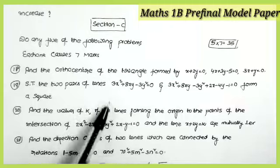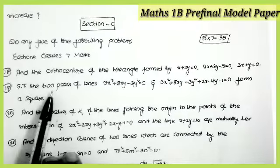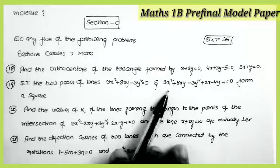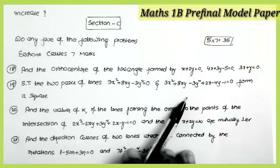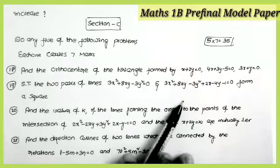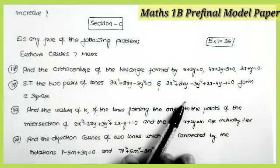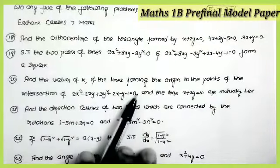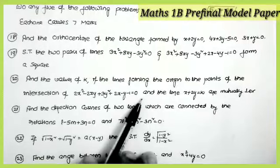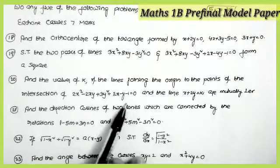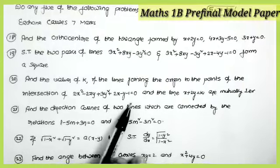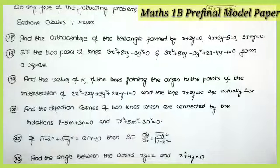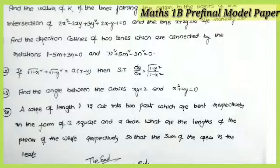Questions 19 and 20 are from Pair of Straight Lines. Question 19: show that the pair of lines 3x² + 8xy − 3y² = 0 and 3x² + 8xy − 3y² + 2x − 4y − 1 = 0 form a square. Question 20: find the values of k if the lines joining the origin to the points of intersection of 2x² + 3y² + 2x − 5y − 1 = 0 and the line x + 2y = k are mutually perpendicular — a very important question.